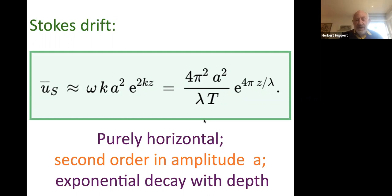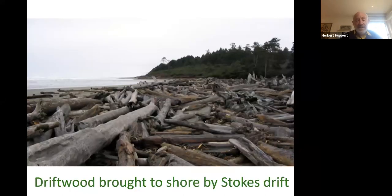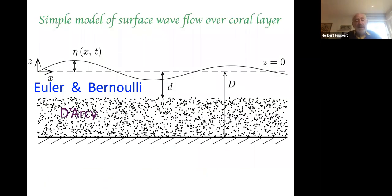This Stokes drift is purely horizontal, second order in amplitude a, with an exponential decay with depth. It is very important because this is the fluid motion that brings driftwood to shore and moves plastics around the ocean — slowly, slowly, Stokes drift moves fluid around.